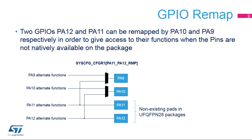When the PA11/PA12_RMP bit in the SYSCFG CFGR1 register is set, the PA11 and PA12 alternate functions are remapped to pins PA9 and PA10. This is useful when these alternate functions are needed while the PA11 and PA12 pins are not available in low pin count packages.